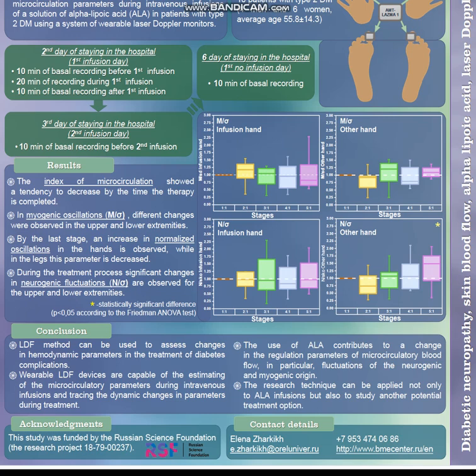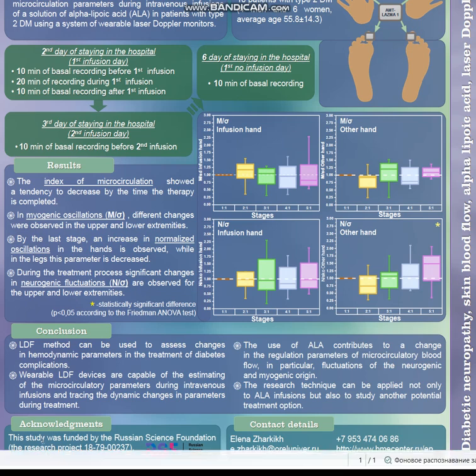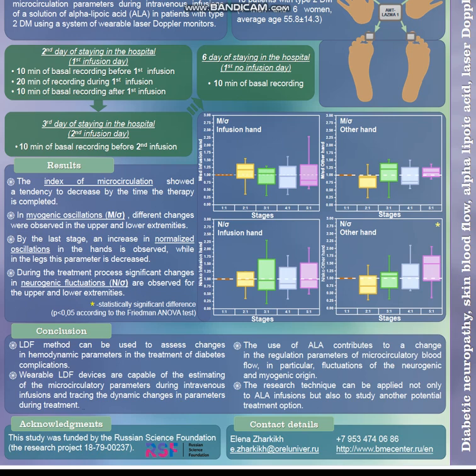The use of alpha-lipoic acid contributes to changes in the regulation parameters of microvascular blood flow, in particular fluctuations of neurogenic and myogenic origin. The research technique can be applied not only to alpha-lipoic acid infusion, but also to study other potential treatment options. This study was funded by the Russian Science Foundation. Thank you for your attention.